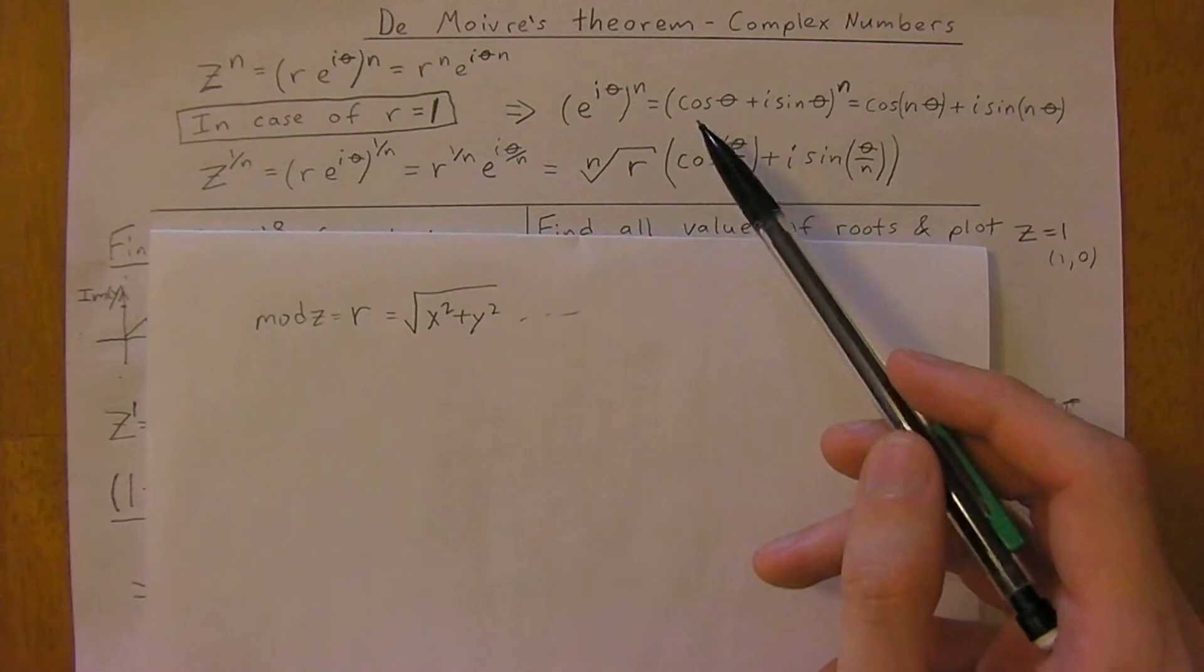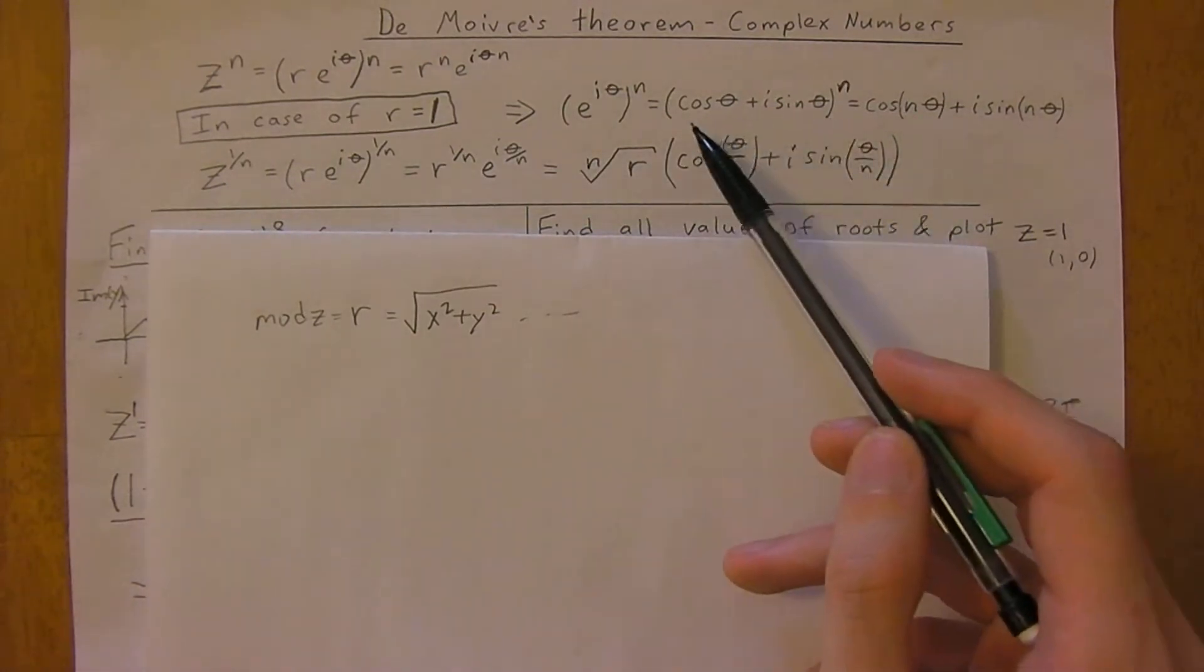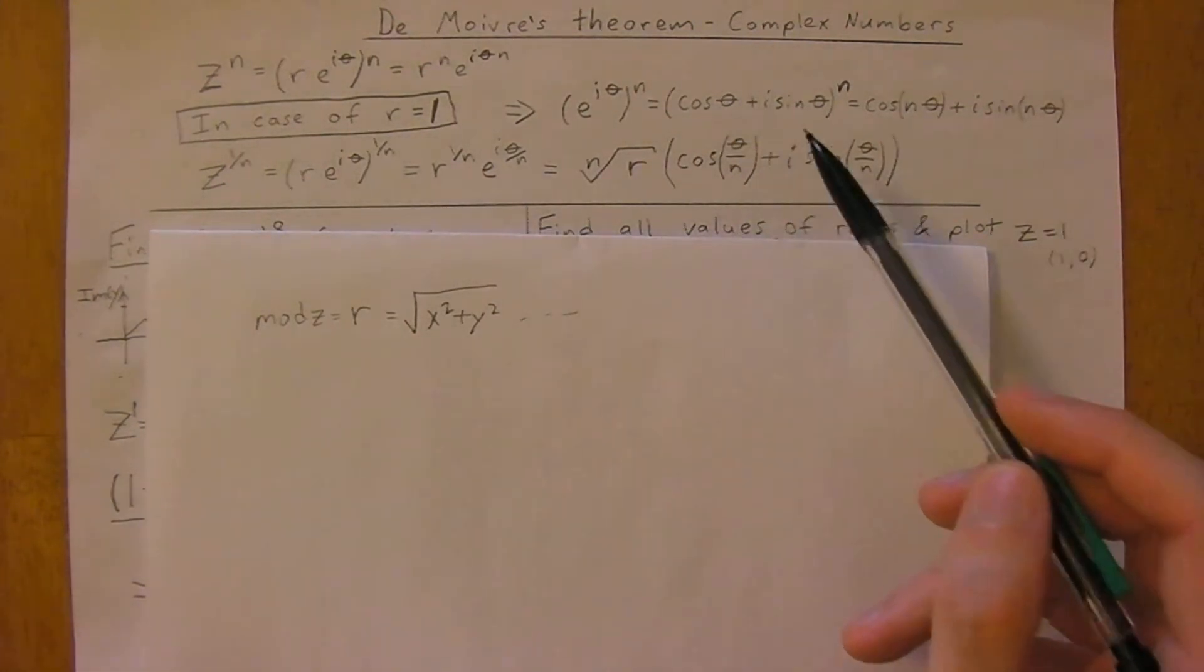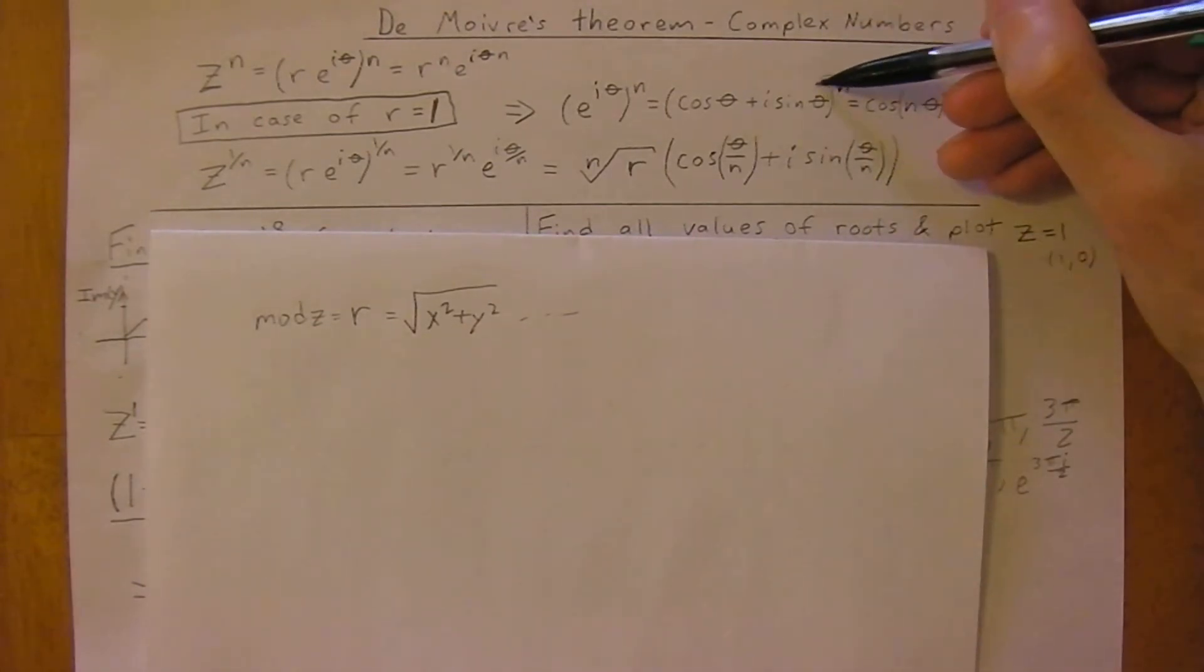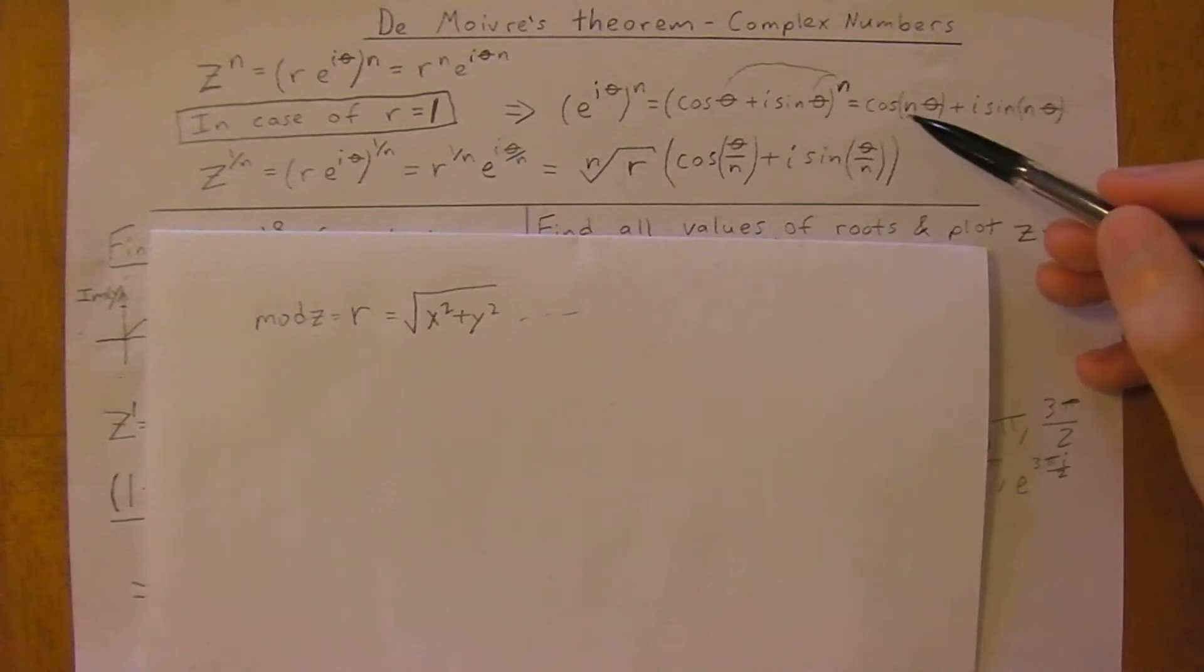Represented in polar form as well, we could have cosine theta plus i sine theta to the n. In this case, the n would come inside in front of both thetas. We'd get cosine n theta plus i sine n theta.